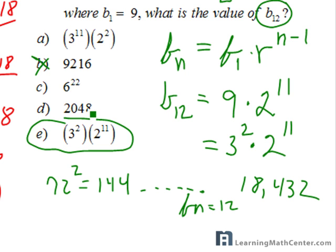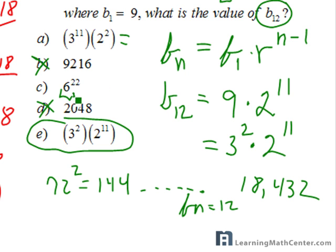We know it couldn't be letter B or letter D, since the 12th term is 18,432. So you go through choices A, C, and E to find which expression evaluates to 18,432. 3 to the 11th times 2 squared will not give you 18,432, and 6 to the 22nd power also will not give that answer. But 3 squared times 2 to the 11th power does give you 18,432. So remember this formula — it saves a lot of time.